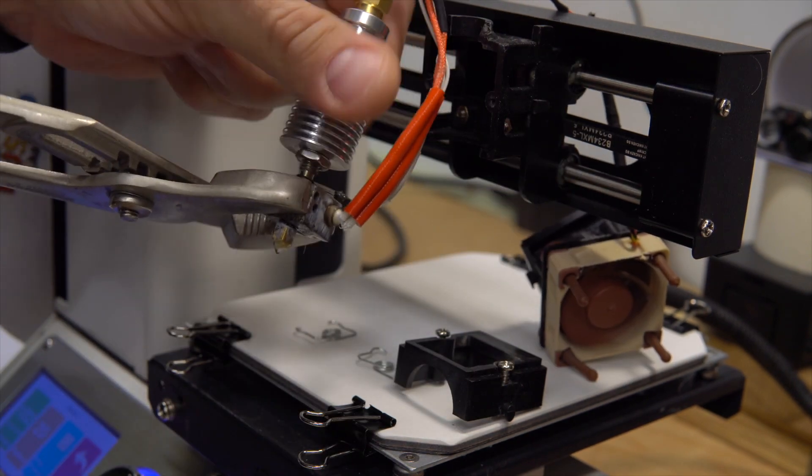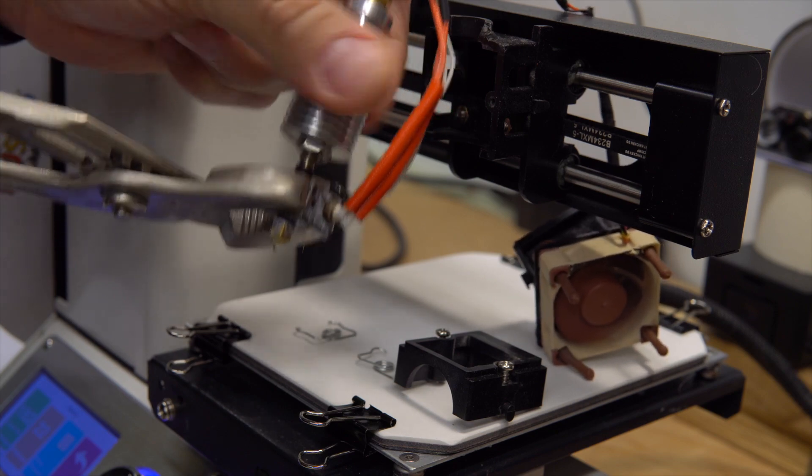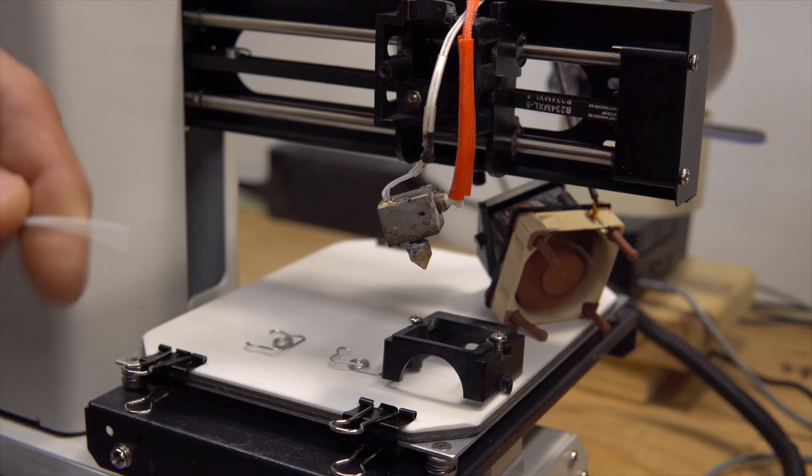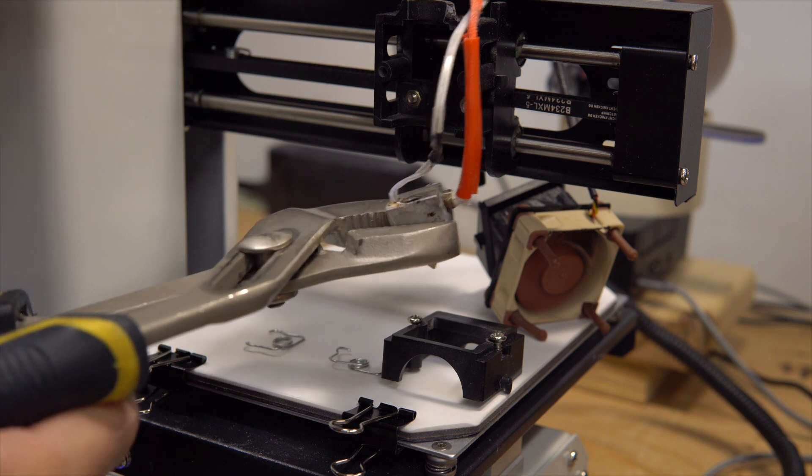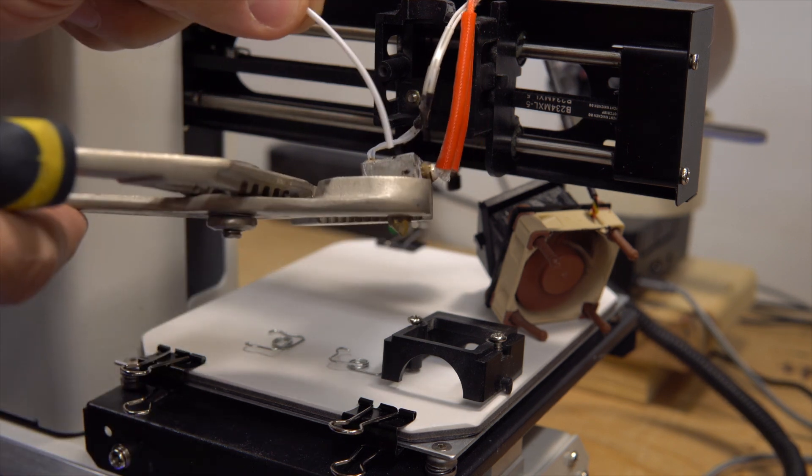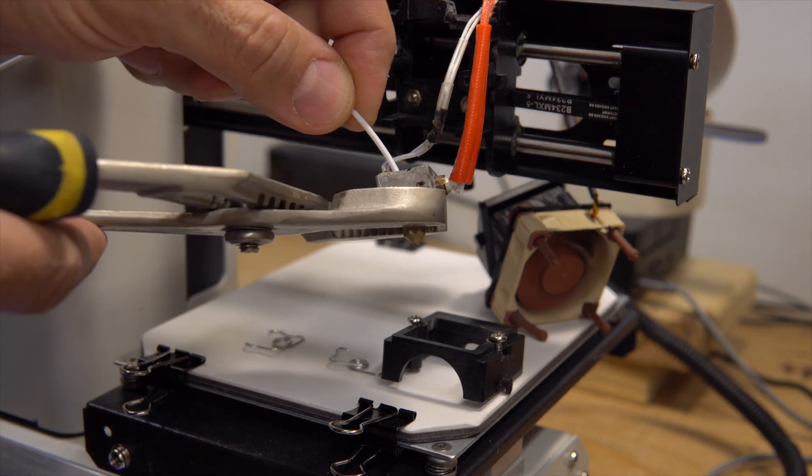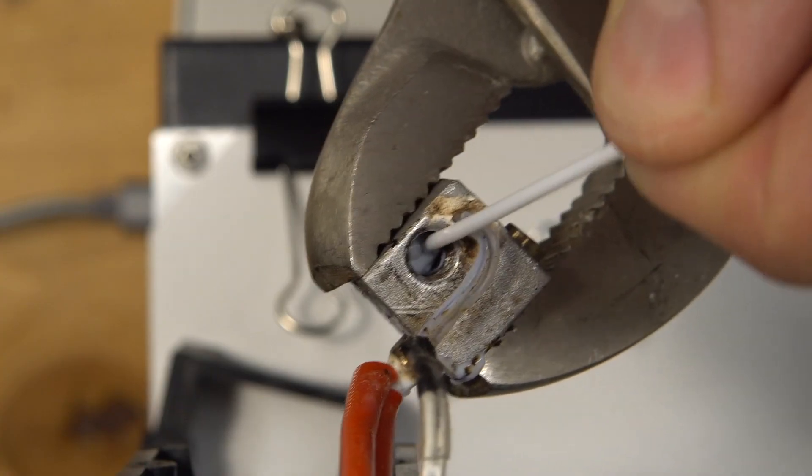Then remove the heatsink. Then what I do is I use a filament and I use it on the heat block. Since it's still hot, you're going to be able to push it through. Then I push it just a bit more like this. Not too much.